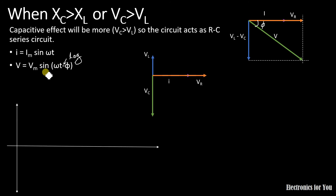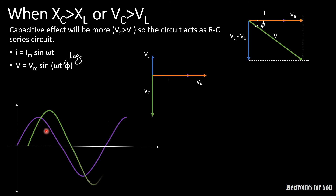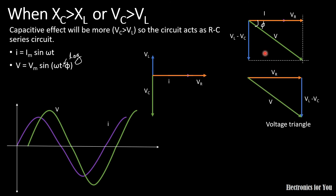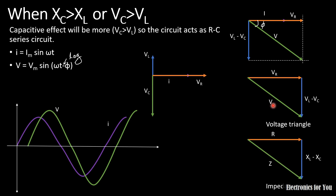Drawing the waveform: i = Im·sin(ωt) is the reference current, and the voltage is lagging — meaning it achieves its maximum, minimum, and zero values after the current. This is the waveform for voltage. Shifting the line gives the voltage triangle, and dividing voltage by current gives the impedance triangle for this capacitive case.